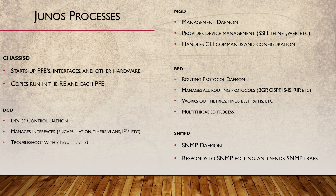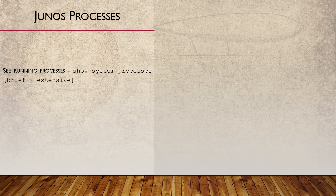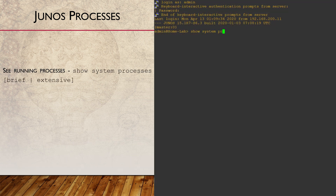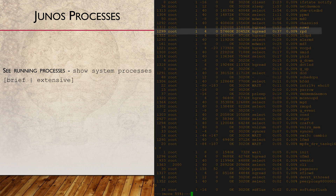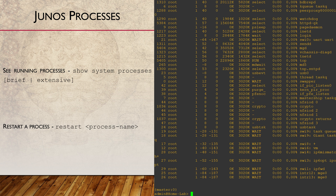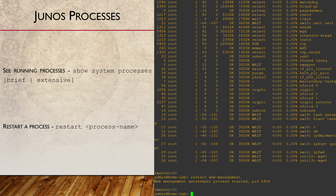Finally, SNMPD manages SNMP requests and responses, as well as SNMP traps. There are plenty more processes — these are just some of the common ones you might come across. In fact, let's take a look at them now. With this command, we can see the name of the process, the percentage of the CPU that it's using, as well as some other details. The restart command lets us restart these processes if we need to.